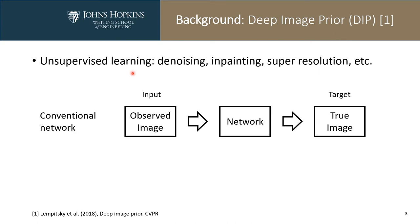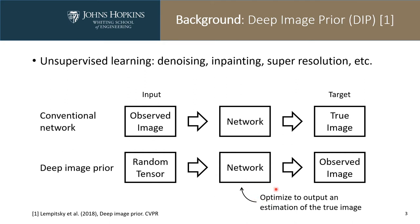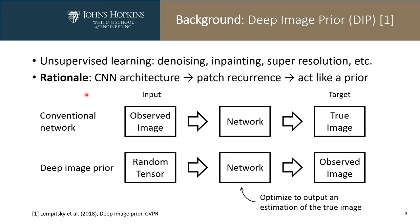As opposed to conventional methods, where we use the observed image as the input to the network and use the true image as the target during training, in deep image priors we use a randomly initialized tensor as the input to the network, and we use the observed image as the target during training. We want to optimize the network parameters to output an estimation of the true image. The rationale is that convolutions in a neural network can capture patch recurrence in the image, and essentially act like a prior during the optimization.